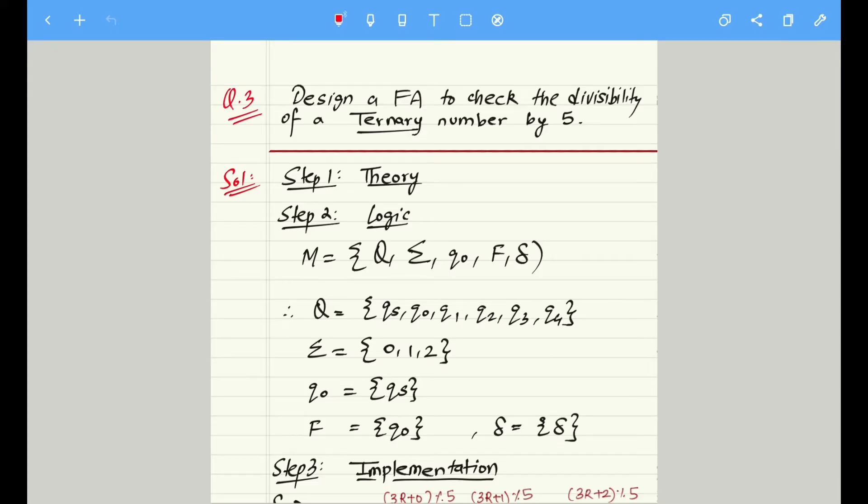So as promised, let's discuss this problem: design a finite automata. This time I have shifted my focus towards finite automata just to differentiate how things look different in case of FSM and FA. Both are having the same underlying architecture.